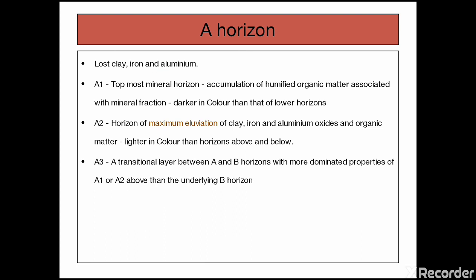Eluviation is a process where clay, iron, and aluminum oxides get leached from the surface. In case of A horizons we have three layers namely A1, A2 and A3. This A1 layer has a mixed layer of organic horizon and inorganic matter. Due to this mixture, A1 horizon is somewhat darker in color when compared to other layers.